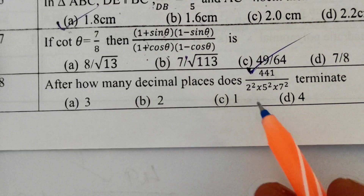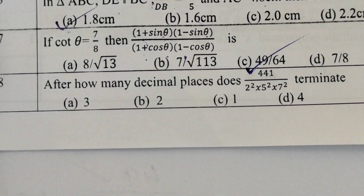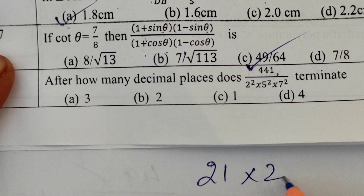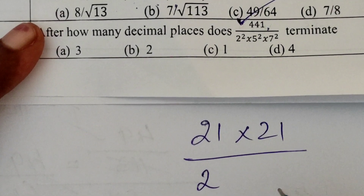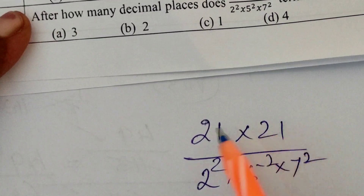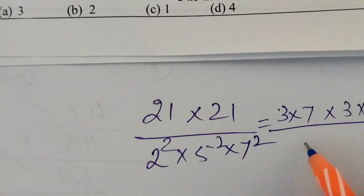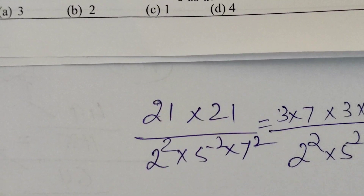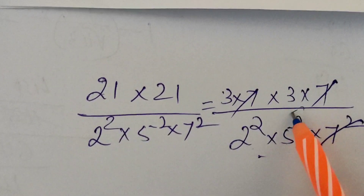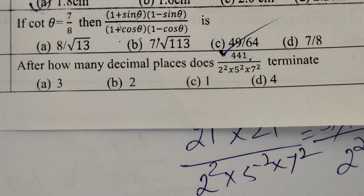Eighth question: how many decimal places does this number terminate? The numerator is 441, which is 21² = 3 × 7 × 3 × 7. The denominator is 2² × 5² × 7². Since the 7² cancels, we're left with 3² in the numerator and 2² × 5² in the denominator — only factors of 2 and 5 remain in the denominator, so the number terminates after 2 decimal places. The answer is B.